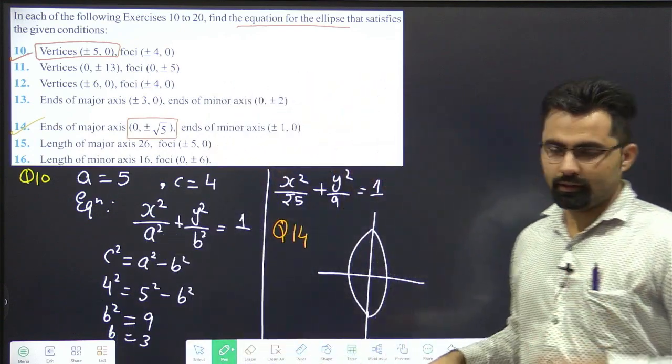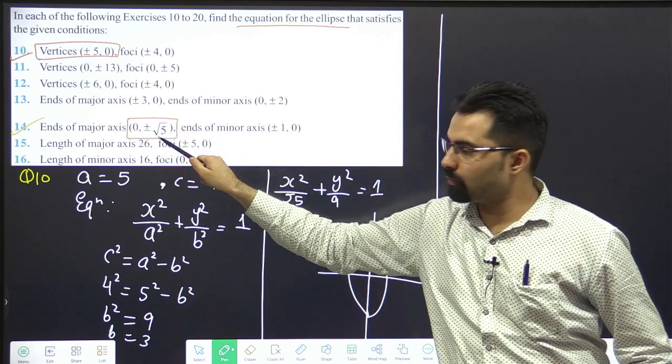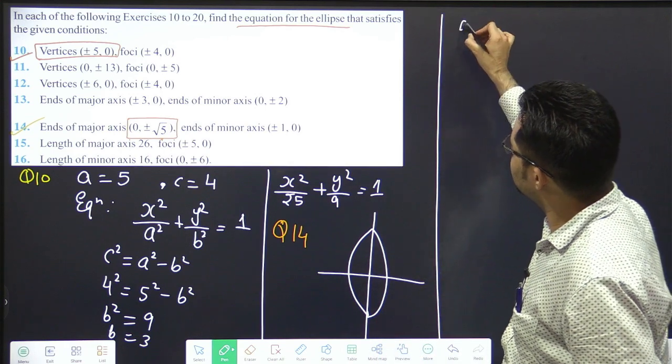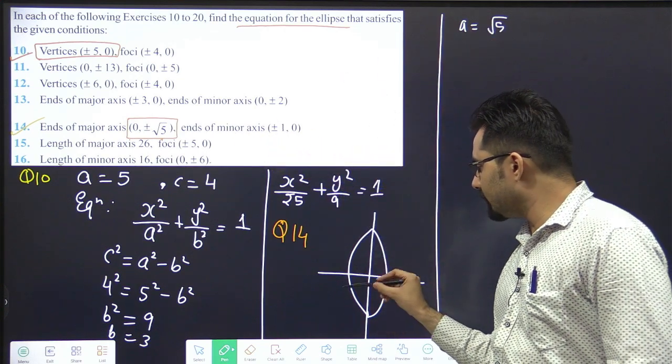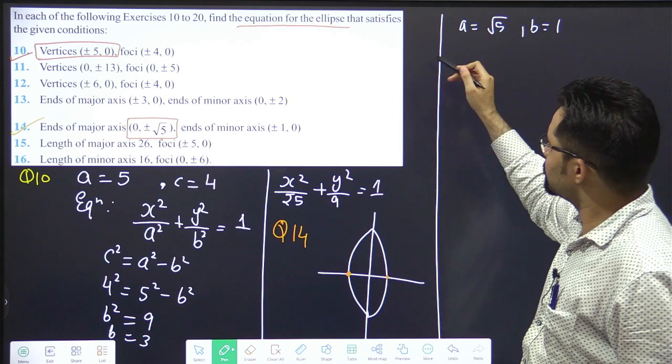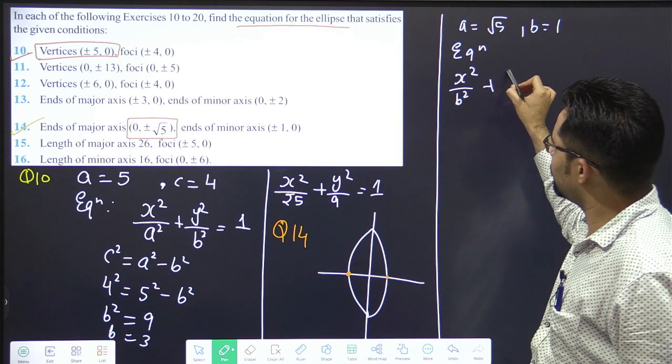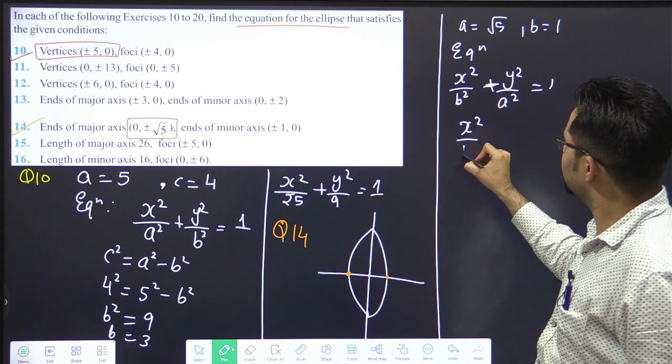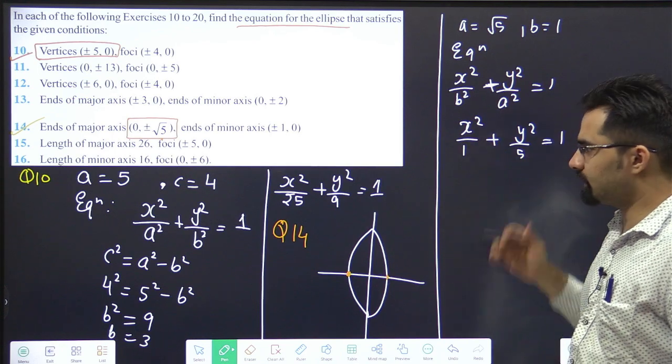Vertical because your major axis, which is the longer axis, is on 0 plus minus root 5. On which axis? Y axis. So a is root 5. Ends of minor axis. Minor automatically is on x. B is 1. Equation is easy. What is the equation? x square by 1, b square, plus y square by a square is equals to 1. x square by 1 plus y square by 5 is equals to 1. Clear?